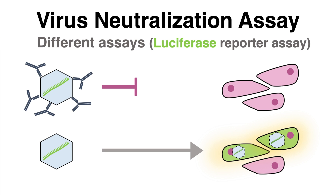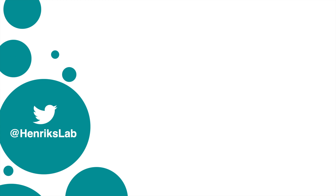There are many different virus neutralization assays. One, for instance, is working with luciferase as a reporter. Pseudovirus-like particles carry the genetic code for luciferase. In case of neutralization, nothing happens. But if the antibodies do not neutralize the particle, an infection occurs and the cells express luciferase, which is detected as a luminescent signal.